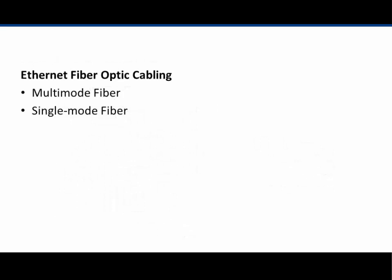There are two main types of Ethernet fiber optic cabling: multi-mode fiber and single-mode fiber. Multi-mode fiber uses an LED light source, while single-mode fiber uses a laser light source. The glass core in multi-mode fiber is generally thicker than in single-mode fiber, which has a much smaller glass core. Multi-mode fiber is generally less expensive than single-mode fiber.